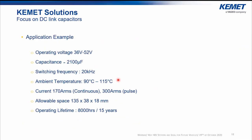How to choose the right capacitor technology? The best way is to work on an application example with specifications selected to be close to what we see from the market. For example, we will have an operating voltage from 36 to 52 volts, with a capacitance of 2.1 millifarad and a switching frequency of 20 kilohertz. The temperature will be from 90 to 115 degrees depending on the cooling system, with very high current depending on the operating mode. The operating lifetime is 15 years with 8,000 hours in active mode.